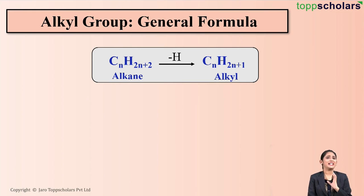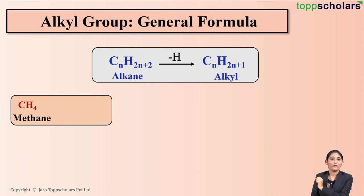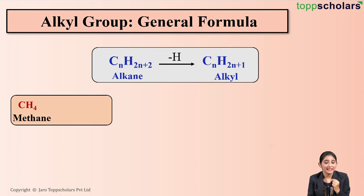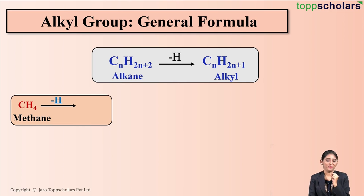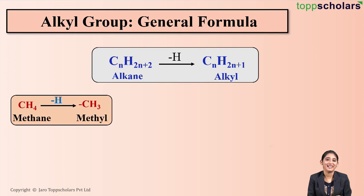Let's take an example to understand this. Here I have an alkane — methane, CH4. So if I want to write the formula of the alkyl group, I need to remove one hydrogen atom. So if I remove one hydrogen atom from CH4, what does it become? CH3, which is the methyl group.